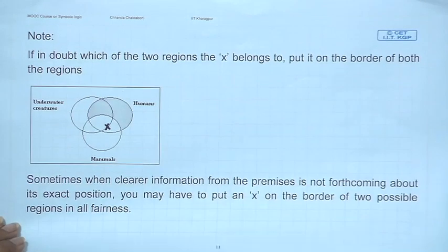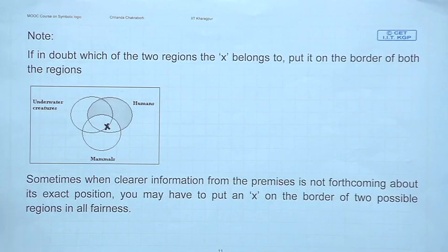This is where we close the discussion on Venn diagrams and the validity of syllogisms. We have seen how it was traditionally done, and we have shown how we tackle it using Venn diagrams. This puts a closure on our discussion of categorical logic - from the next module onwards we will leave categorical logic behind. Thank you very much for your time and patience; we will see you again in the next module.